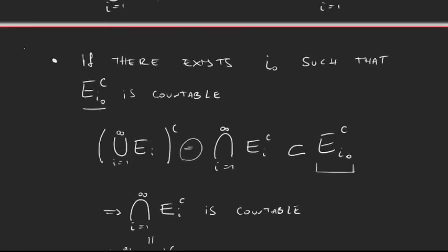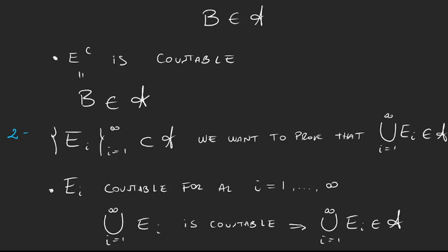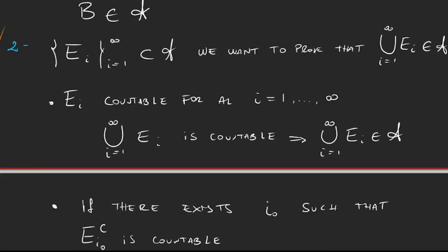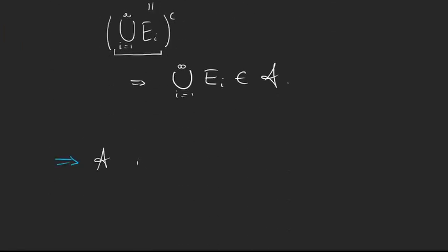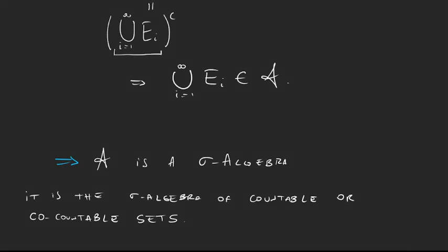And that's it. We defined this collection of subsets of X, proved it is closed under complements, and proved it is closed under countable unions. With these two properties, we can say that A is a sigma algebra. This sigma algebra has a particular name — it is called the sigma algebra of countable or co-countable sets. In the next video, we're going to learn about the generated sigma algebra.